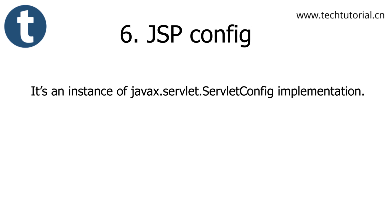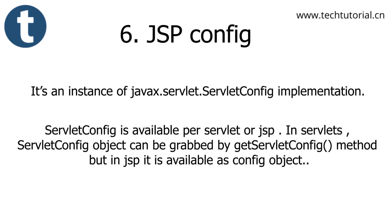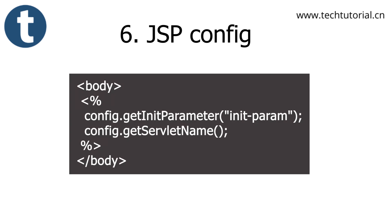The next one is the JSP config object. It is an instance of javax.servlet.ServletConfig implementation. The config object is available in both servlet and JSP. In a servlet, the ServletConfig object is created via getServletConfig(), but in JSP it is available directly as the config object. For example: config.getInitParameter(paramName) and config.getServletName().